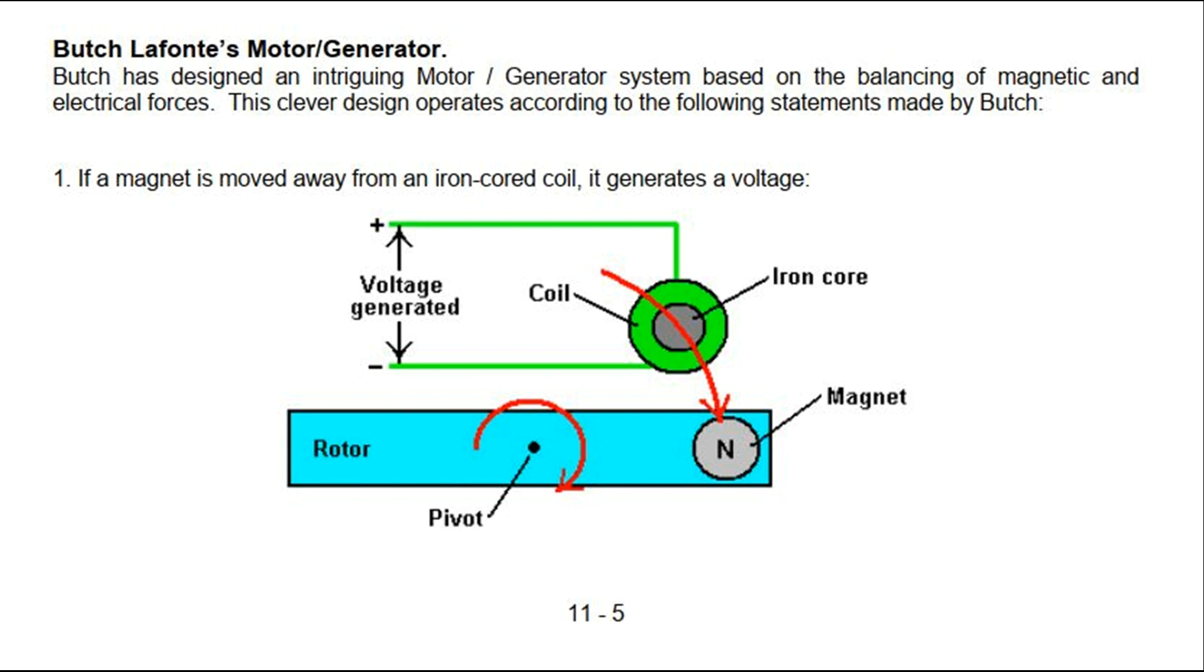First: If a magnet is moved away from an iron-cored coil, it generates a voltage. Coils voltage generated.